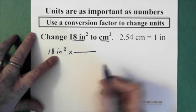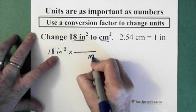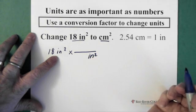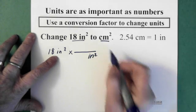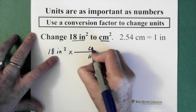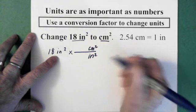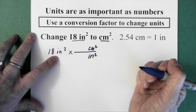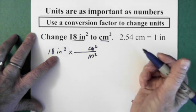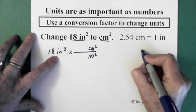I want inches squared to be gone, so I put inches squared in the denominator. I want centimeters squared, so I put centimeters squared up here. The problem is I don't know the relationships between centimeters squared and inches squared. So, then what I do is I go over here.